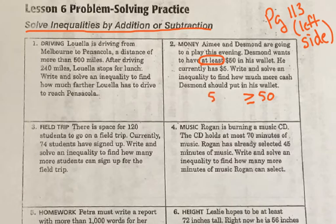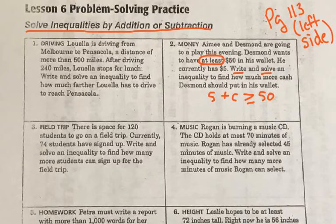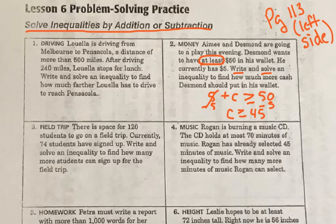Write and solve an inequality to find how much more cash Desmond should put in his wallet. We don't know how much, so we are asked to write an inequality and then solve it. We want to get C by itself, so we're going to subtract 5 from both sides. C is greater than or equal to $45, meaning his cash needs to be greater than or equal to $45 — that's how much more cash he needs to have $50 in his wallet.